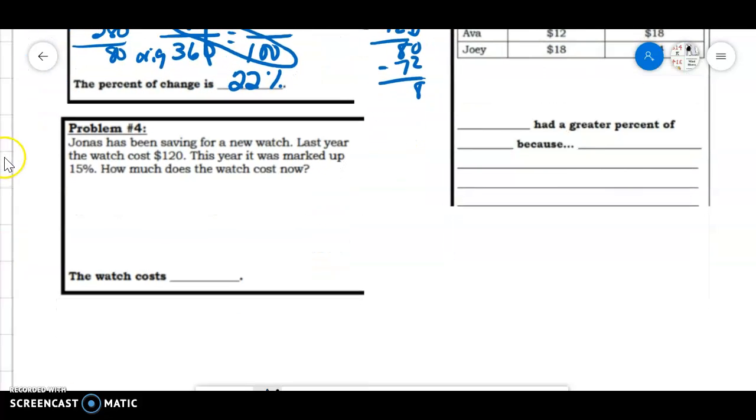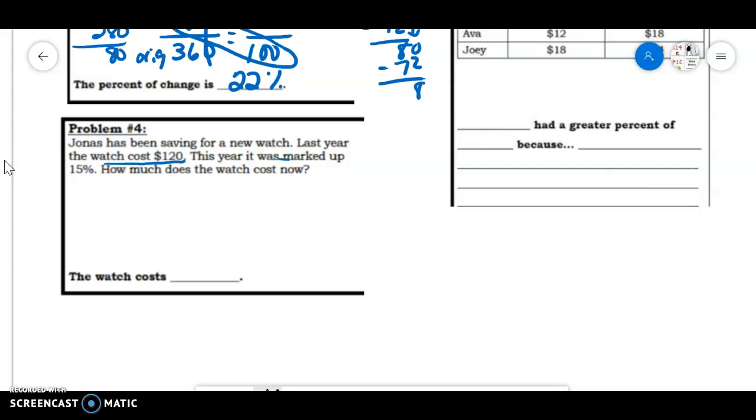Number two, Jonas has been saving for a new watch. The watch cost $120, and it was marked up 15%. How much does it cost now? So if it was $120, this is our original. So 120 is our 100%. It went up 15%, so we need to put that over 100.